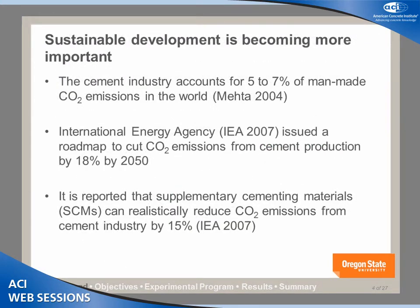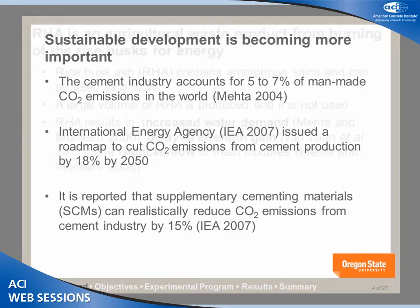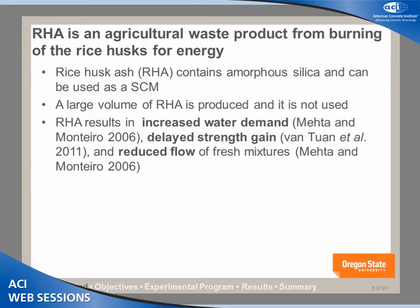We all know that the cement industry accounts for five to seven percent of carbon dioxide emissions. The IEA — International Energy Agency — has made a roadmap that we need to cut carbon dioxide emissions by 18 percent within 40 years. If we can add supplementary cementing materials to our system, we're going to reduce about 15 to 20 percent, which almost achieves the goal of the IEA. So what is rice husk ash? Rice husk ash is actually the cover of the rice, and they burn it for getting energy.